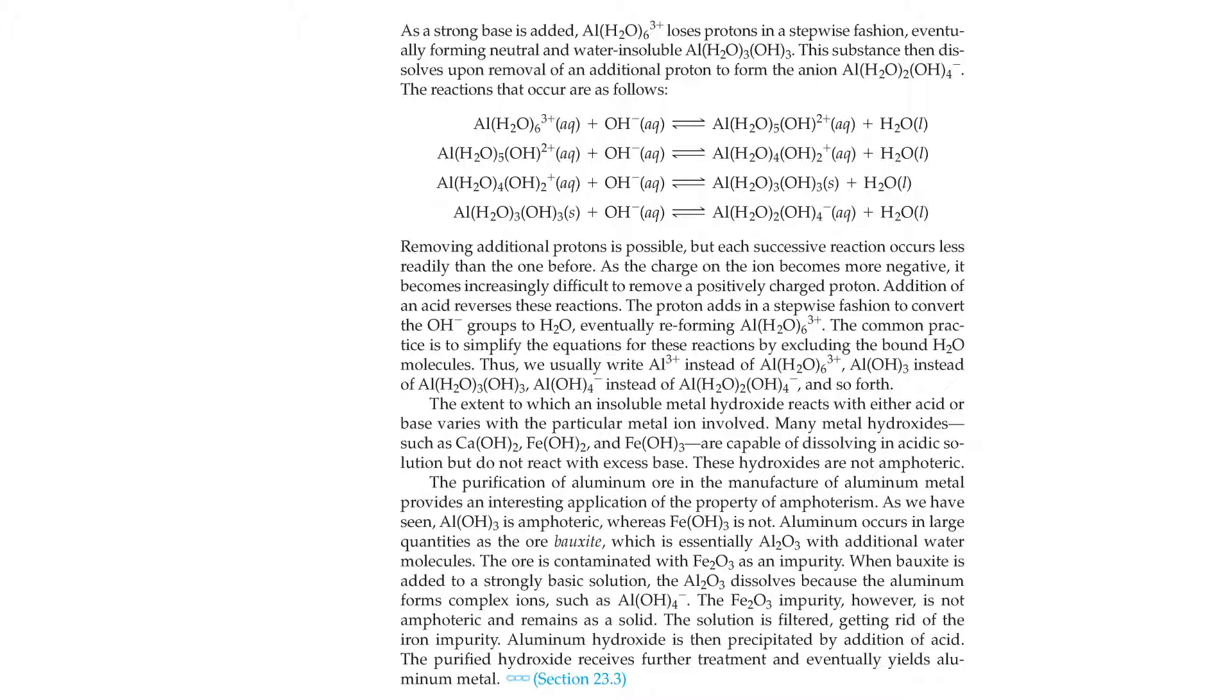The purification of aluminum ore in the manufacture of aluminum metal provides an interesting application of the property of amphoterism. As we've seen, aluminum hydroxide is amphoteric, whereas iron hydroxide is not. Aluminum occurs in large quantities as the ore bauxite, which is essentially Al2O3 with additional water molecules. The ore contains iron oxide as an impurity. When bauxite is added to a strongly basic solution, the aluminum oxide dissolves because the aluminum forms complex ions. The iron hydroxide impurity, however, is non-amphoteric and remains as a solid. The solution is filtered, getting rid of the iron impurity. Aluminum hydroxide is then precipitated by addition of an acid. The purified hydroxide receives further treatment and eventually yields aluminum metal.